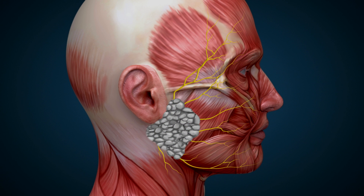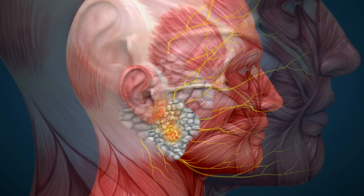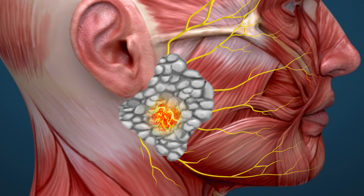Most masses that develop in the parotid gland are due to benign tumors, such as a pleomorphic adenoma or a Warthin's tumor. Although non-cancerous, they do become larger over time and as such are typically removed before it becomes disfiguring. More rarely, cancerous growths can also occur.